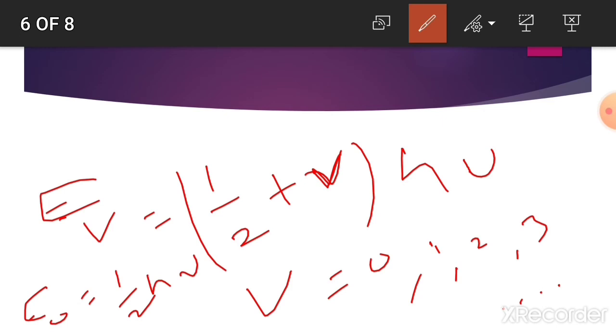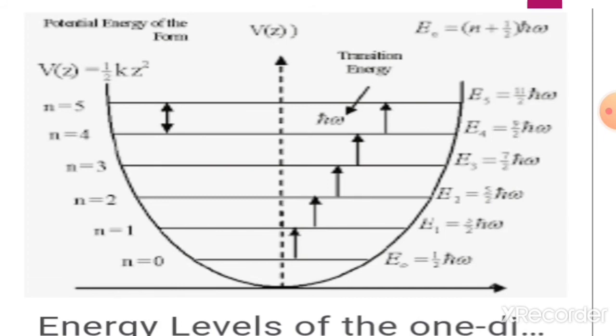When v value is 2, the energy is 5 by 2 h nu. Similarly we get 7 by 2, and so on. In this way we can see that for a simple harmonic oscillator, if we make an energy level diagram of the harmonic oscillator...